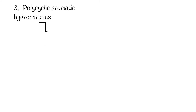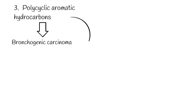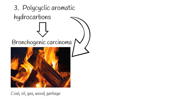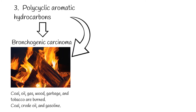3. Polycyclic aromatic hydrocarbons cause bronchogenic carcinoma. They are produced when coal, oil, gas, wood, garbage, and tobacco are burned. In addition, they occur naturally in coal, crude oil, and gasoline.